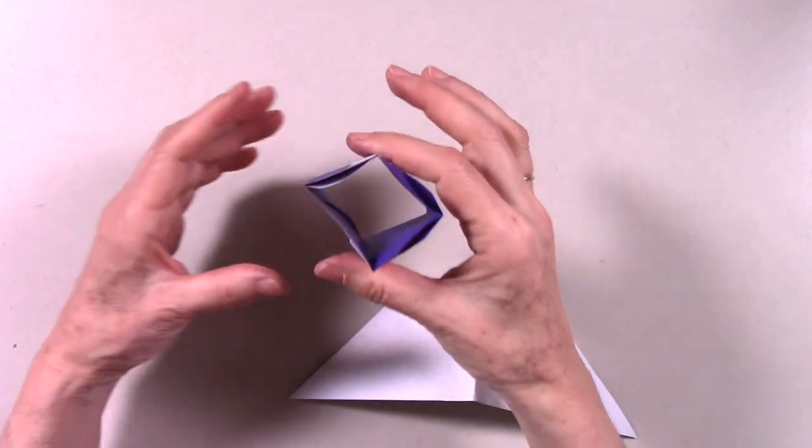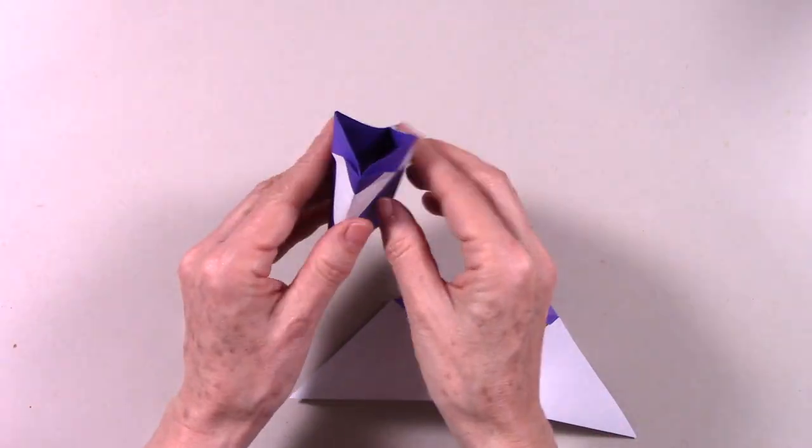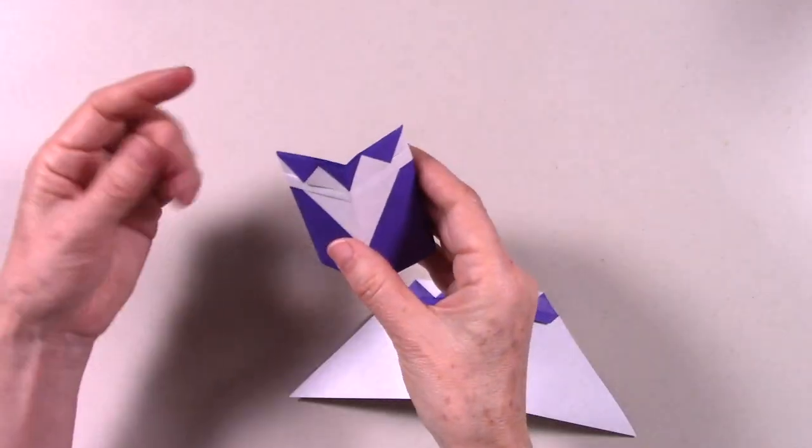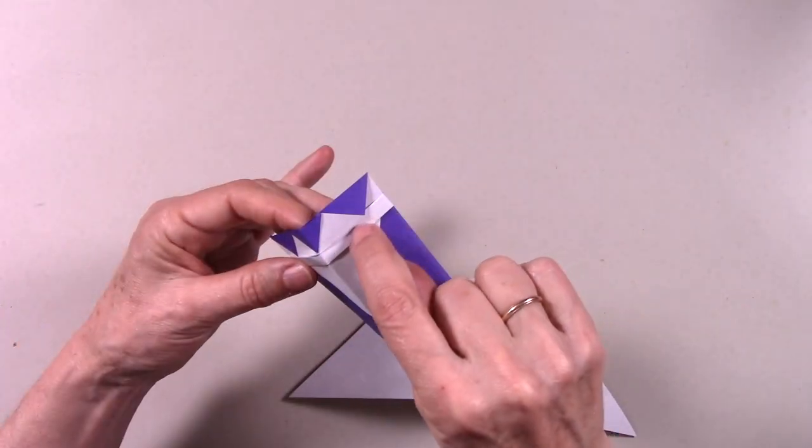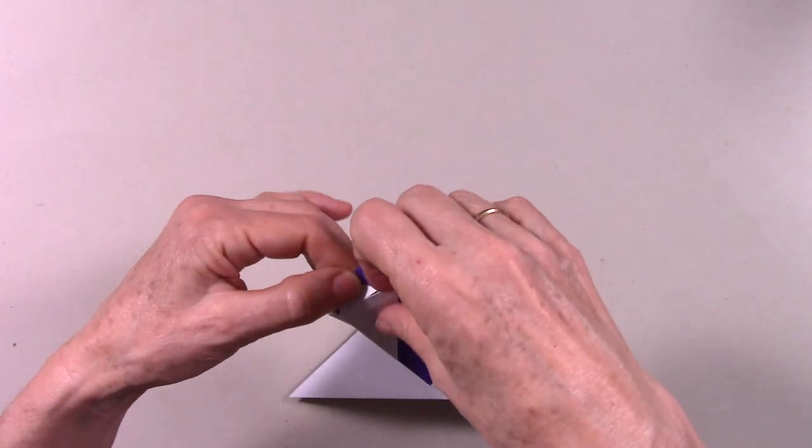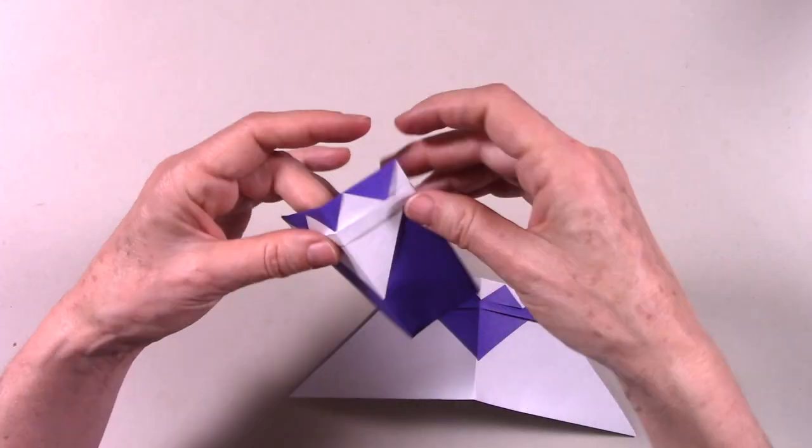And we can come back to the front and actually make sure that the edge of the crown is trapped under the hem.